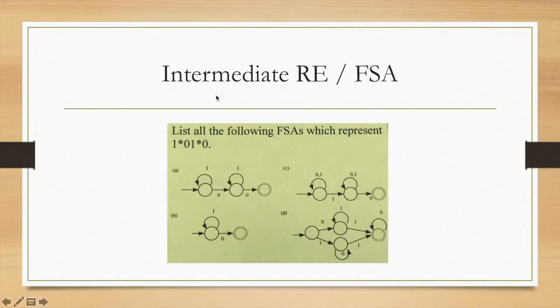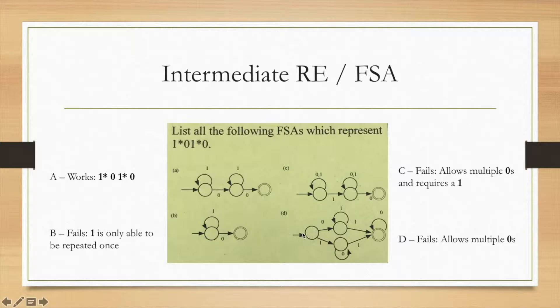Here we have: list all the following FSAs representing one star zero one star zero. A is going to work—it's very simple: one star, then zero, then a one star, then a zero. B is going to fail because the one is only able to be repeated once, and you need that option twice here. C has a mandatory one, and that's not found here, so that's simply off the list. Then D also fails because at the end it allows unlimited zeros, so that simply does not match this required one.